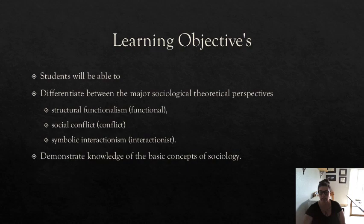Today's learning objectives: first, we want to review some of the main concepts we learned last week. Then as a student, you should be able to differentiate between the three main theoretical paradigms — structural functionalism, social conflict theory, and symbolic interactionism — and demonstrate basic knowledge about these three theories as well as some other primary classical theorists within the field of sociology.